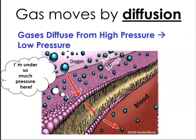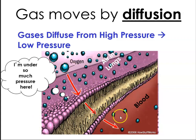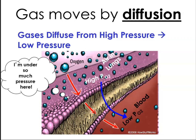Gas moves by diffusion, which we talked about earlier. Diffusion is a passive process — it does not require energy or ATP. Gases diffuse from areas of high pressure to areas of low pressure. The oxygen in the lungs moves through the single-walled layer of the alveoli into the capillaries where the red blood cells are waiting. There is higher partial pressure of oxygen within the lungs, and that allows for diffusion of oxygen from high pressure into the capillaries where the blood is.